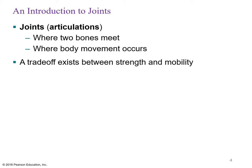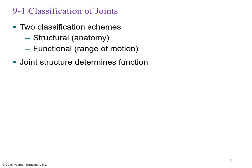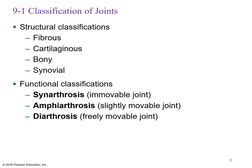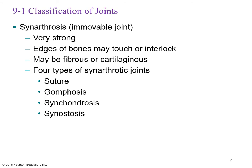A joint is an articulation where two bones meet and body movement occurs. Without joints, it would be one big stiff rod — a trade-off exists between strength and mobility. There are two classification schemes: structural (fibrous, cartilaginous, bony, or synovial) and functional based on range of motion. A synarthrosis is immovable, an amphiarthrosis is slightly movable, and a diarthrosis is freely movable.